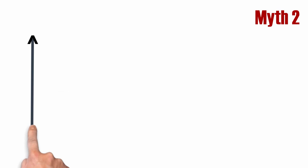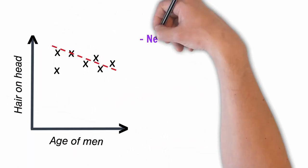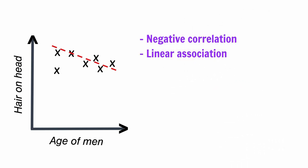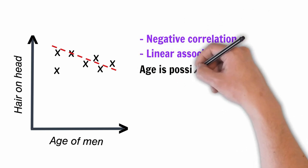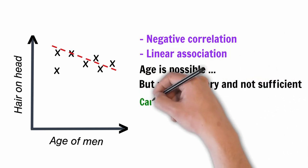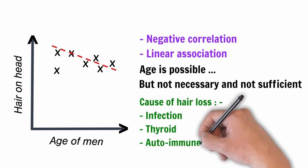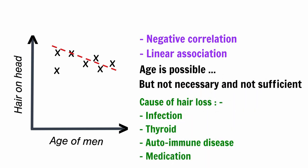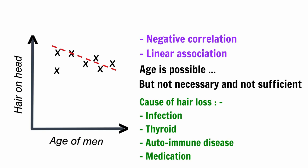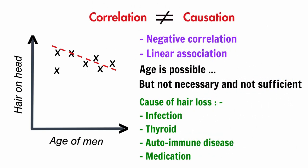Myth number two. In this graph of age of men versus the amount of hair on their head, we see negative correlation and linear association. However, this definitely does not lead us to conclude that increasing age is the cause of hair loss amongst men. Hair loss can be caused due to other reasons like an infection, thyroid, autoimmune disease, or medication that can happen even at an early age to anyone including men. Therefore, correlation does not indicate causation.